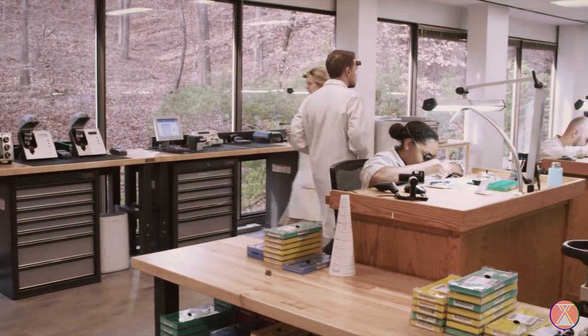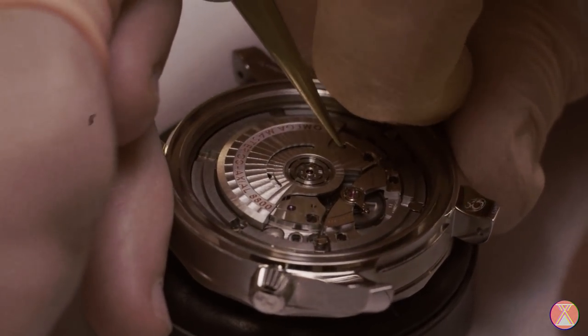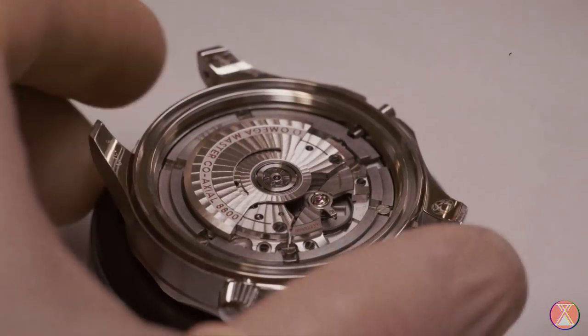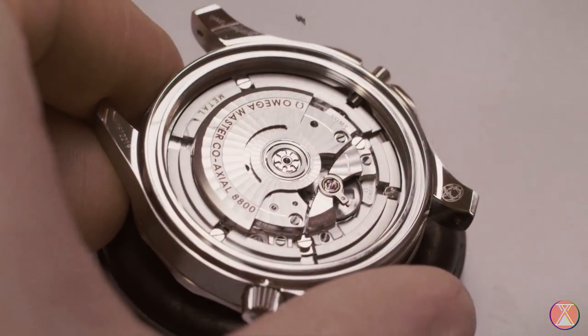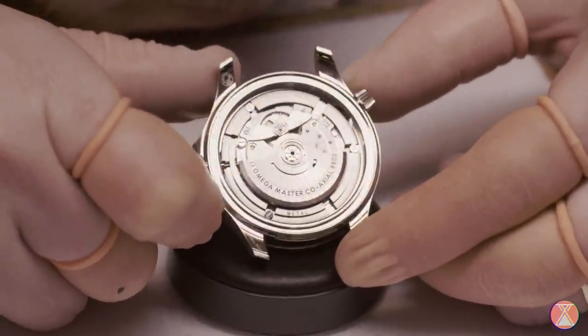An interesting point of your coaxial is because of the tight tolerances, because of the limited surface area that's interacting, the lubrication in your escapement is for sound dampening. It's not actually entirely necessary for the function of the escapement because there's so little friction. It works so well that you don't need it.